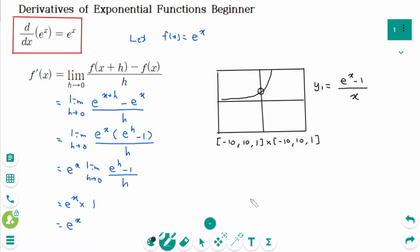Using your calculator, set y1 equal to e to the power of x minus 1 over x, and you will see this graph. When you check the table, you will see this — there is a hole when x equals 0. So the limit as h approaches 0 of e to the power of h minus 1 over h equals 1.